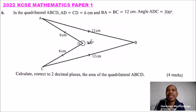So angle ADC is 300. We are shown that. That is the reflex angle. So with that information, calculate, correct to two decimal places, the area of quadrilateral ABCD.